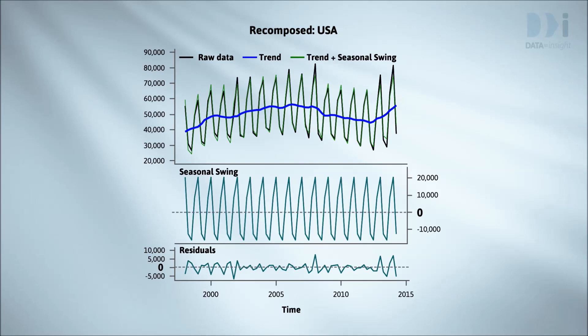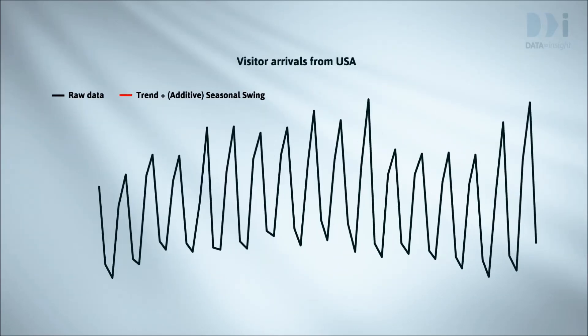Next we'll show an example where the seasonal swings are obviously not constant. This will lead us to another type of decomposition — multiplicative decomposition. But even in this example, if we look very critically at what trend plus additive seasonal swing is giving, there's a slight suggestion that the swings are too wide at the left-hand end, where the series trend is low, and not wide enough in the places where the series trend is high. We'll see you next time. Bye-bye.